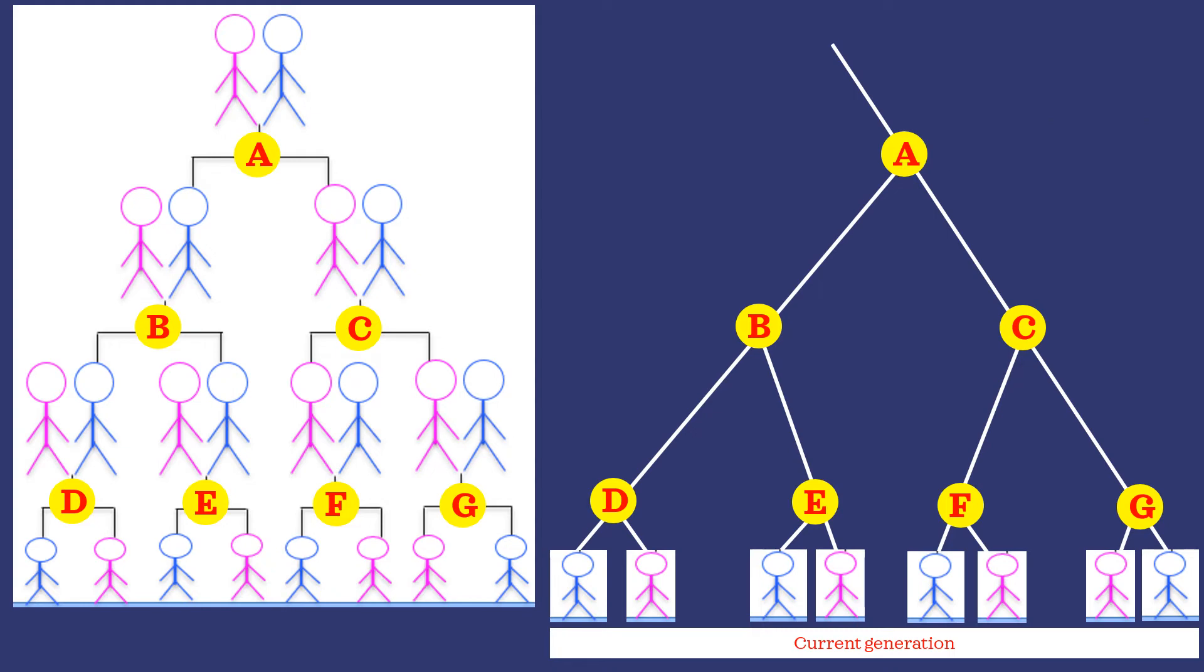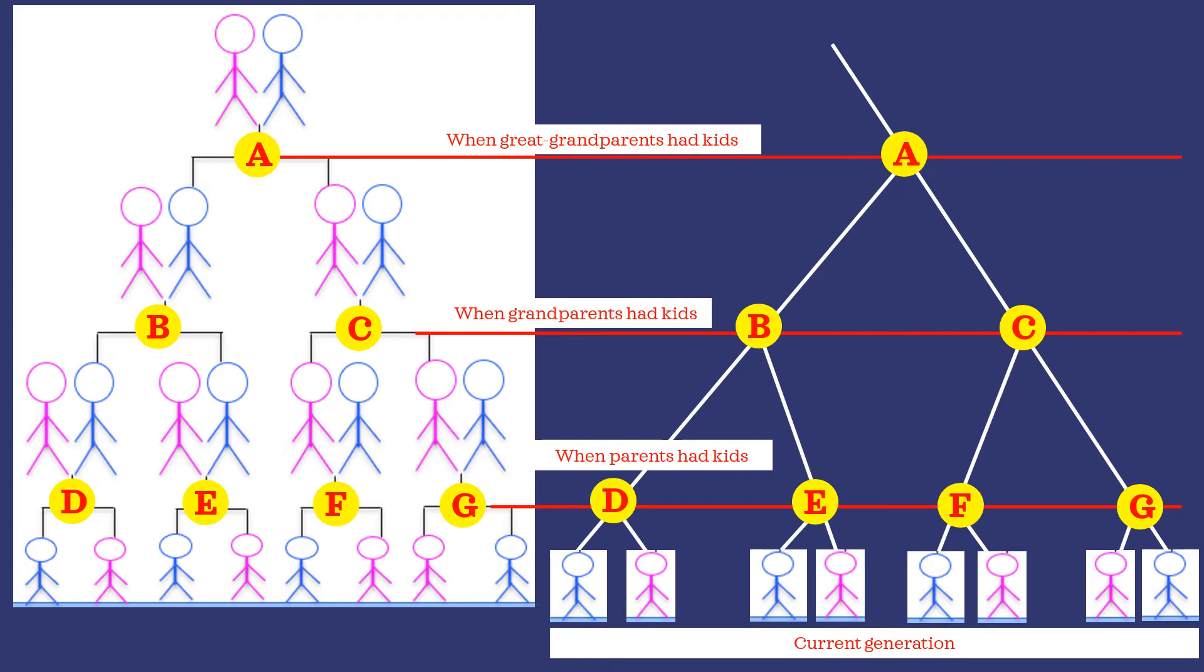I would like to point out that these time signatures are the same. Node A is drawn a certain distance above nodes B and C to indicate generation time, or the average number of years it took for those kids to grow up and have children of their own. And the same is true of the distance between the grandparents' generation and the parents' generation.